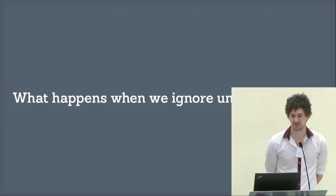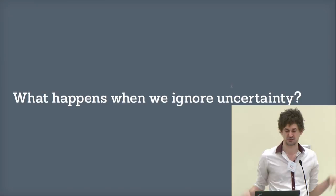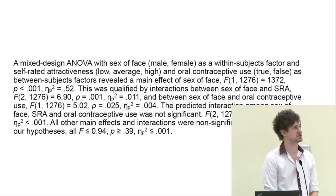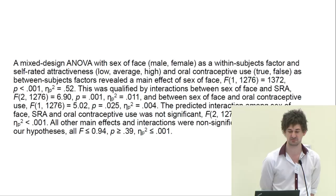What I'd like to start with is this question: what happens when we ignore uncertainty? This is one of my favorite examples. This is from recommendations for how scientific papers should be written: a mixed design ANOVA with sex of face as a within-subjects factor and self-rated attractiveness and oral contraceptive use as between-subjects factors revealed a main effect of sex of face, F(1, 1276) = 1372, P < 0.001 — no thanks.